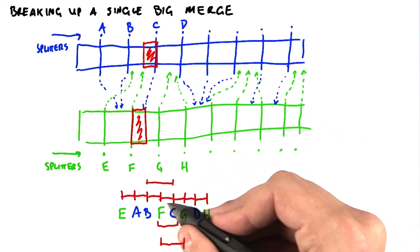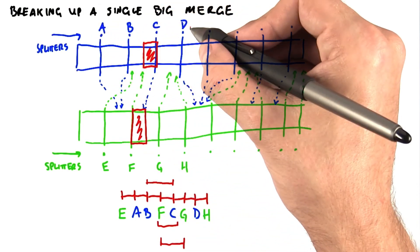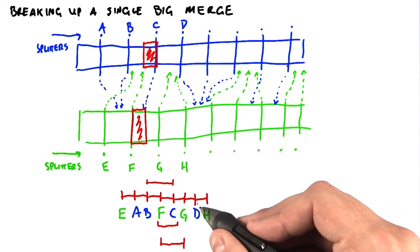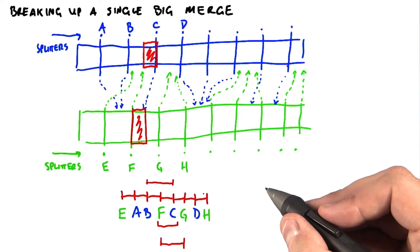So we can guarantee that there are no more than 512 elements between F and C. And so by choosing the spacing between the splitters, we can guarantee a maximum size on any of the independent chunks that we need to independently merge in the last stage of this algorithm.